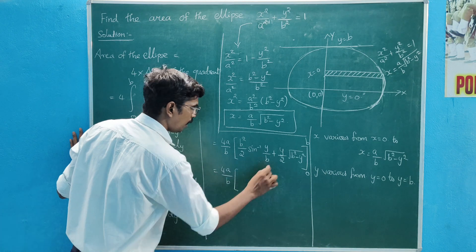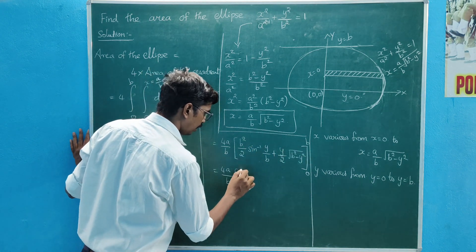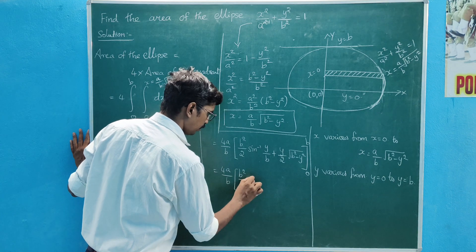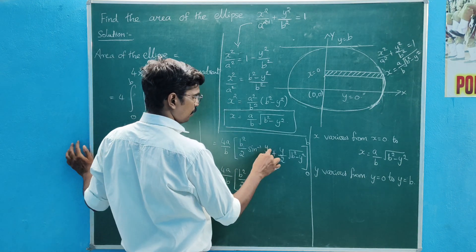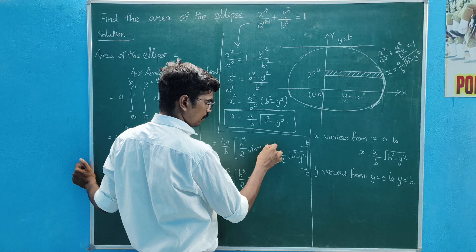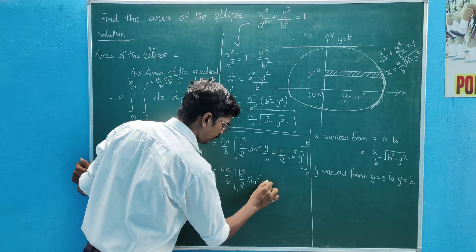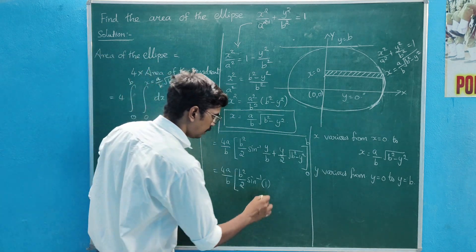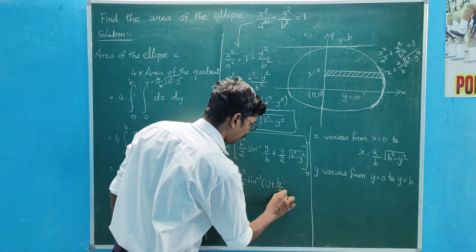4a/b, upper limit is b. Applying the standard formula: y/2 × √(b² − y²) + b²/2 × sin⁻¹(y/b), evaluated from 0 to b.